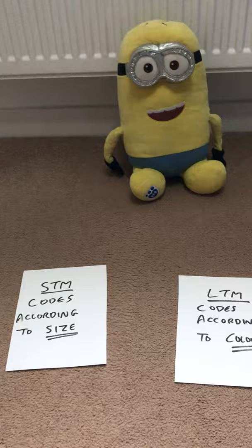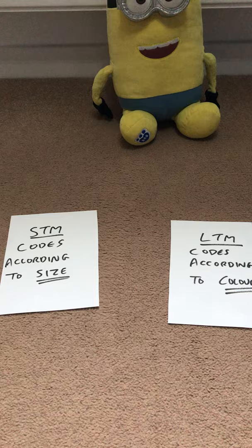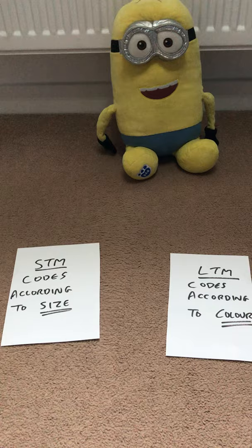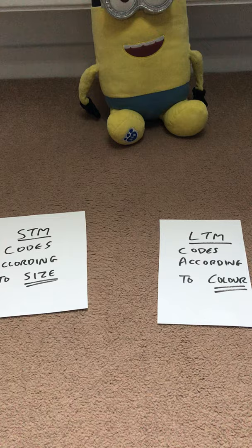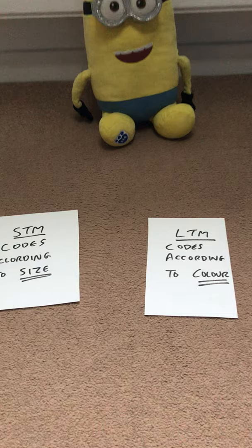We're on tour in my son's bedroom to try and explain the findings of Baddeley's study into coding in short-term and long-term memory. Students tend to be happy with the procedures — they understand the four different groups: acoustically similar, acoustically dissimilar, semantically similar, semantically dissimilar. In a short-term memory task, the group with acoustically similar words did worse, and in the long-term task, the group with semantically similar words did worse. What they struggle to do is explain how that supports the idea that short-term memory is coded acoustically and long-term memory is coded semantically.